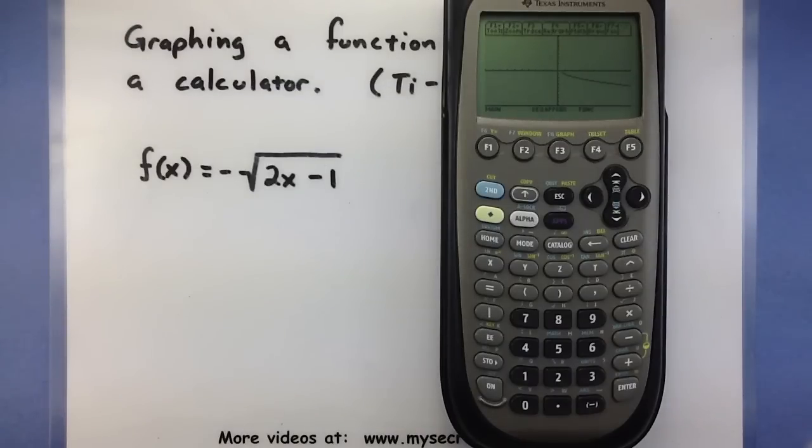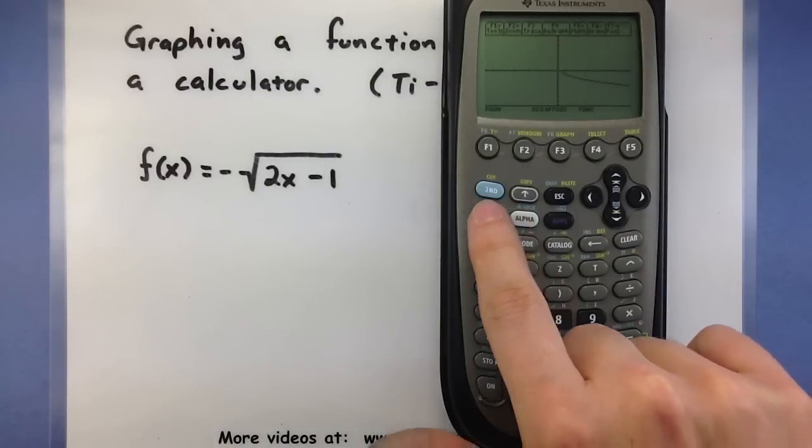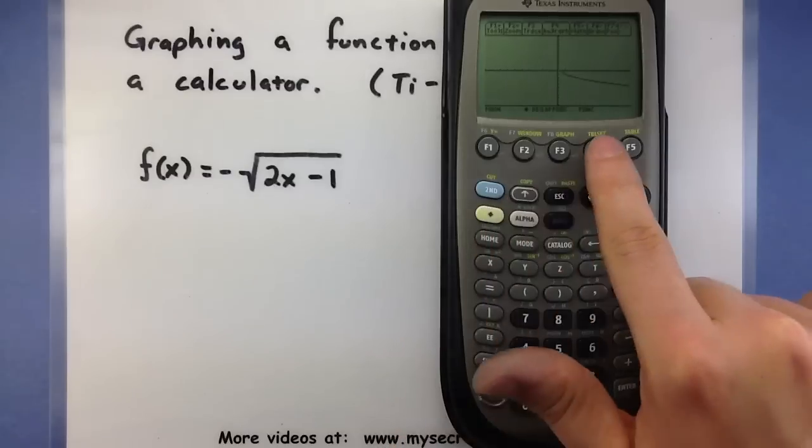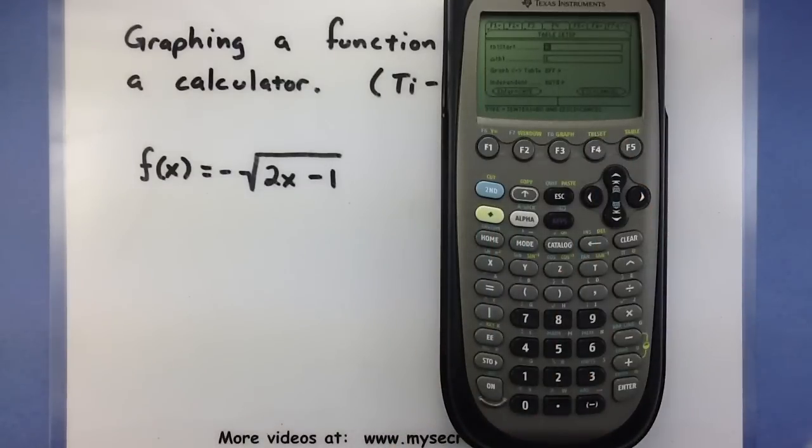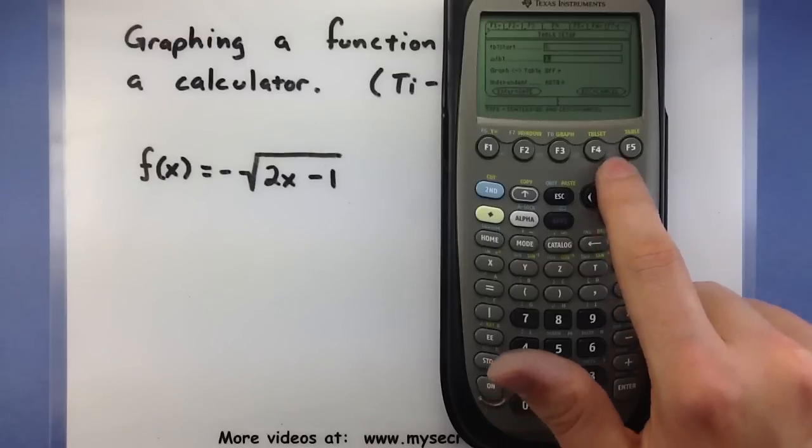Now, one additional thing that you can do is check the values that the calculator is using to graph. And you can do this by using your table. First, press your green button in F4 to see how your table is set. Usually, the first value is 0 and the second value is 1. That means the table starts at 0 and then every number after that goes up or down by 1.